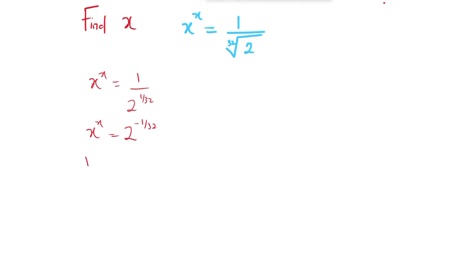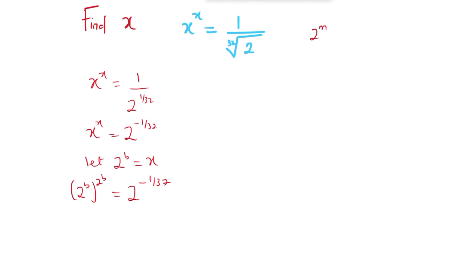So now, let 2 raised to power b equal x. From here, we are going to have 2 raised to power b, raised to power 2 raised to power b, which is the same thing as 2 raised to power negative 1 over 32. And remember the rule of indices that says 2 raised to power m times n is the same thing as 2 raised to power m multiplied by n.